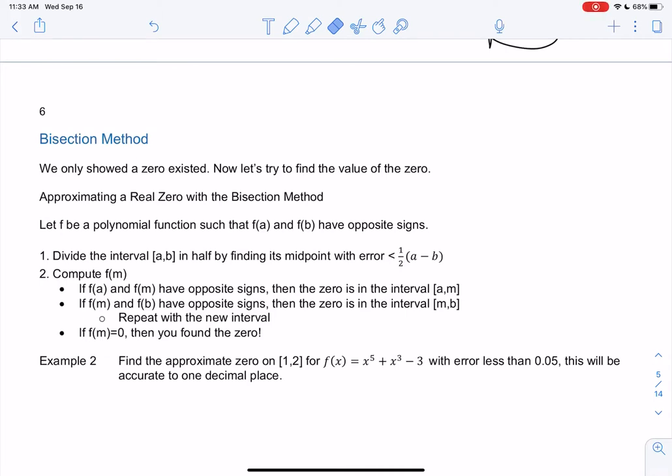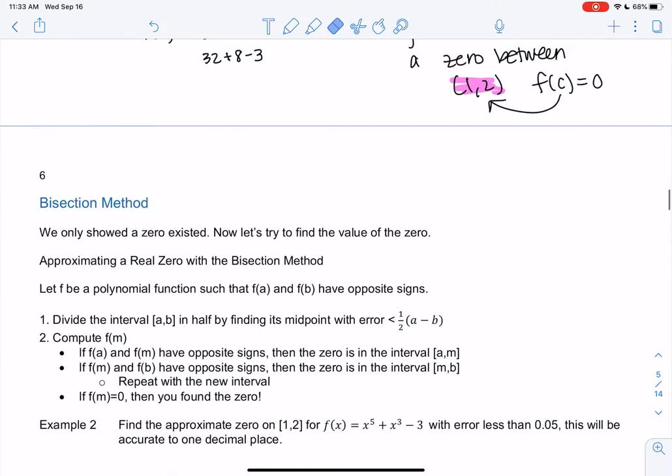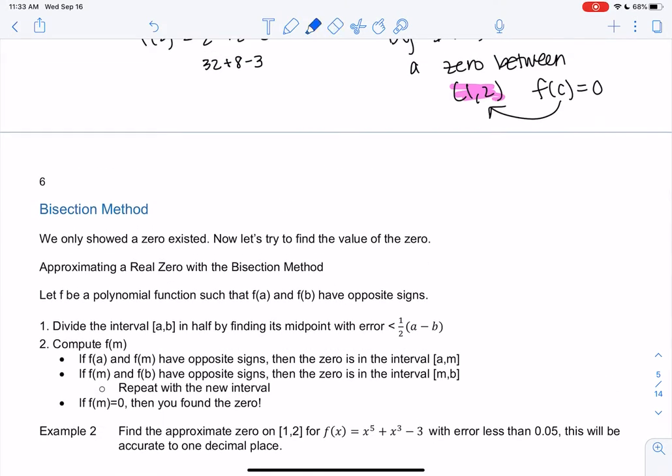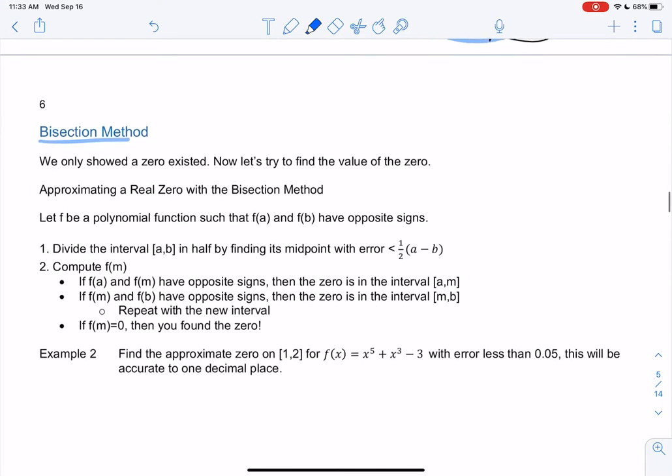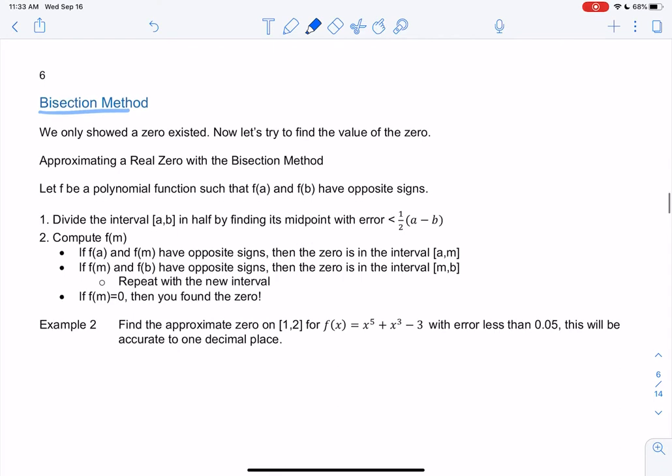Alright, so we just proved a zero existed, but we're probably wondering why do we even care? We proved a zero existed in this interval last time. Now what we're going to do is use the bisection method to find that zero in the interval. Now that we showed it existed, we're going to try to find the value.